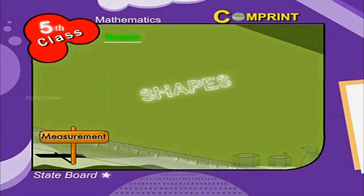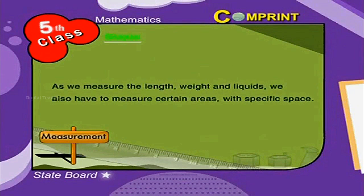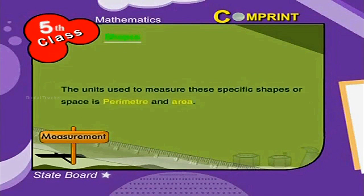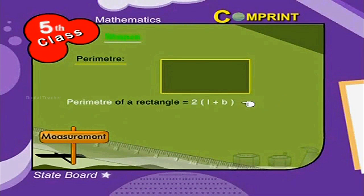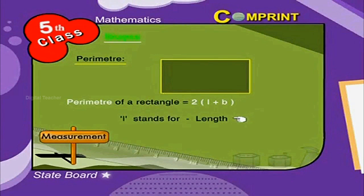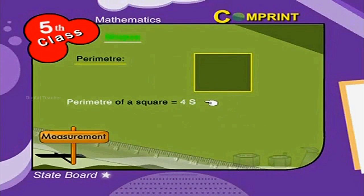Measurement of different shapes: as we measure length, weight, and liquids, we also have to measure certain areas with specific space. The units used to measure these specific shapes or space are perimeter and area. The sum of all the sides of a closed figure is called its perimeter. Perimeter of a rectangle is equal to 2 into (l plus b), where l stands for length and b stands for breadth. Perimeter of a square is equal to 4s, where s is the side of a square.